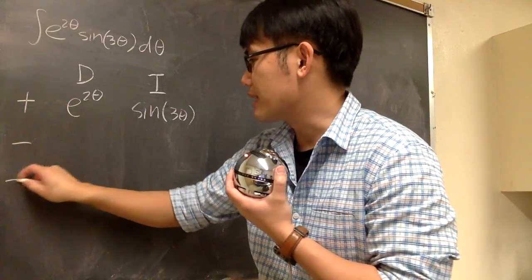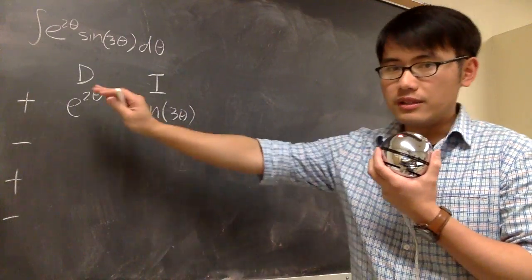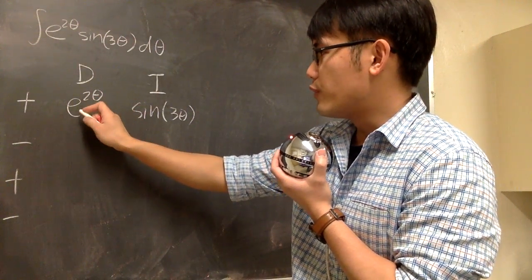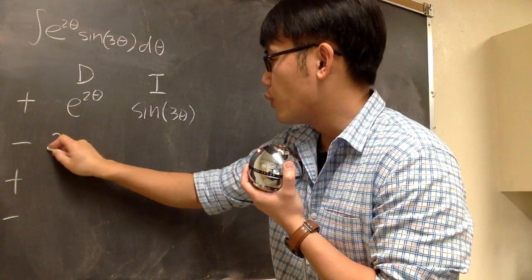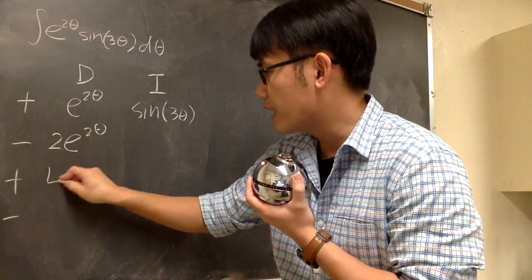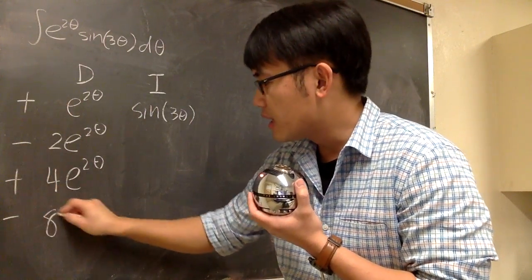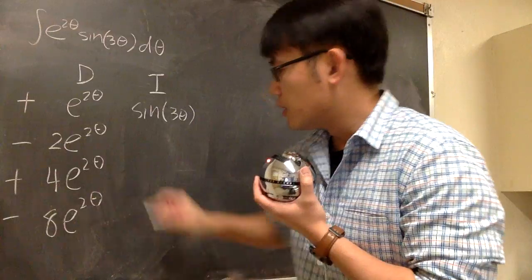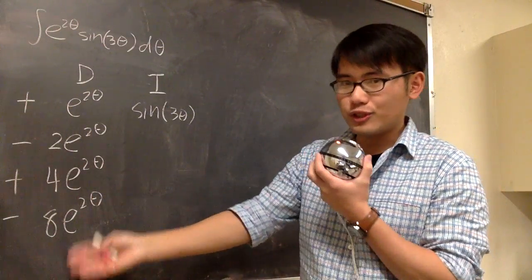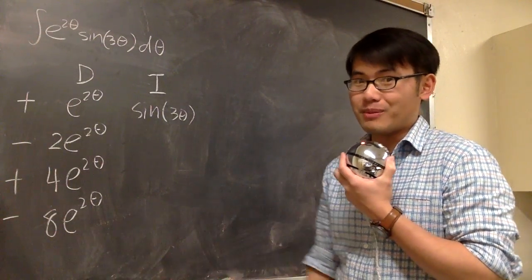Don't forget, let's put down the plus-minus signs. I don't know how many I need, so let's put down a few of them and see. Now let's differentiate e to the 2 zeta. The first time, we get 2e to the 2 zeta. The second time, we get 4e to the 2 zeta. And if we do it again, 8e to the 2 zeta. It's always going to be e to the 2 zeta times something, so let me just do a few of them.